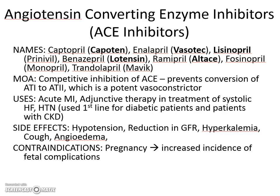They work through competitive inhibition of your angiotensin converting enzyme, which is produced in the lung. The ACE inhibitors basically prevent conversion of your angiotensin 1 to your angiotensin 2 by preventing ACE from doing its job. Angiotensin 2 is obviously a potent vasoconstrictor, so if you prevent angiotensin 1 from being converted to angiotensin 2, you can essentially control hypertension.